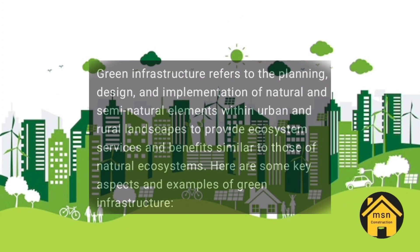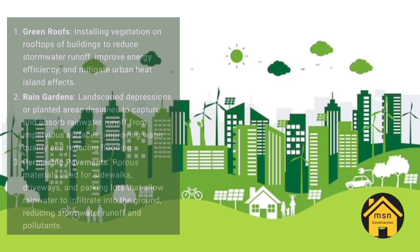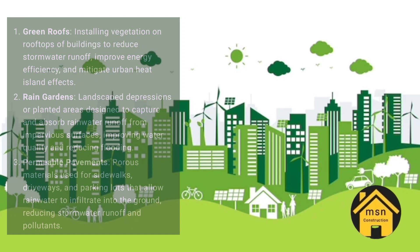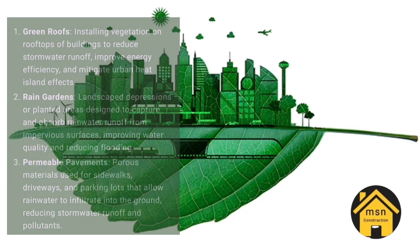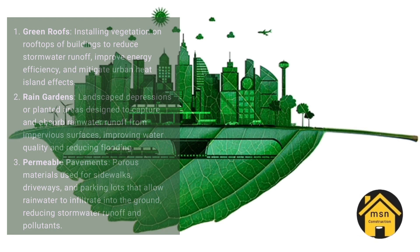Examples of green infrastructure include: green roofs — vegetated roofs that capture and absorb rainwater, reduce energy consumption, and mitigate the urban heat island effect; rain gardens — sunken garden beds planted with native vegetation to capture, filter, and infiltrate stormwater runoff, improving water quality and reducing flooding; and permeable pavements — pavement surfaces designed to allow water to infiltrate through the surface.